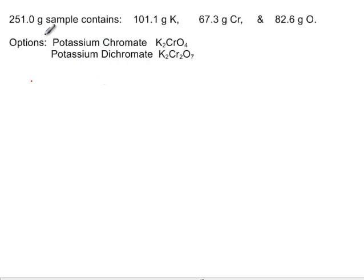In this problem we're going to analyze an unknown sample. What we know about the unknown sample is that it has a mass of 251 grams and contains potassium, chromium, and oxygen. We also know that it could be one of two samples: it could be potassium chromate, K2CrO4, or it could be potassium dichromate, K2Cr2O7.